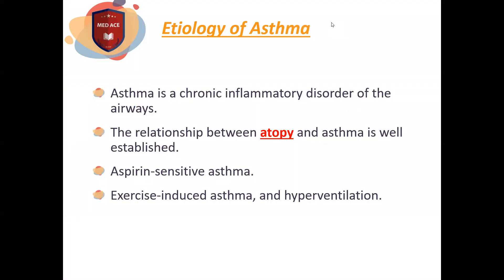Regarding the etiology of asthma: asthma is a chronic inflammatory disorder of the airway with hyper-responsiveness. Importantly, this inflammation is reversible with drugs. Atopy means the patient has a very high level of immunoglobulin E and is sensitized to certain allergens, such as pollen or animal dander.